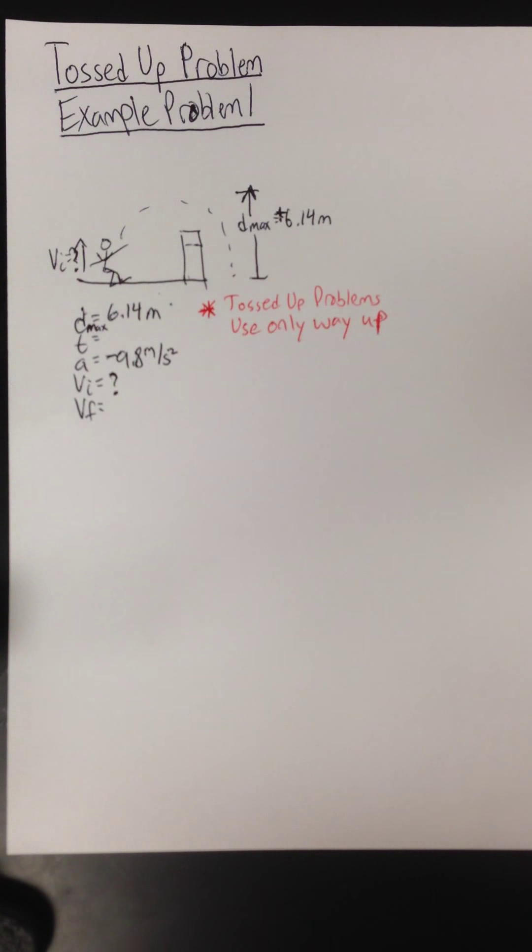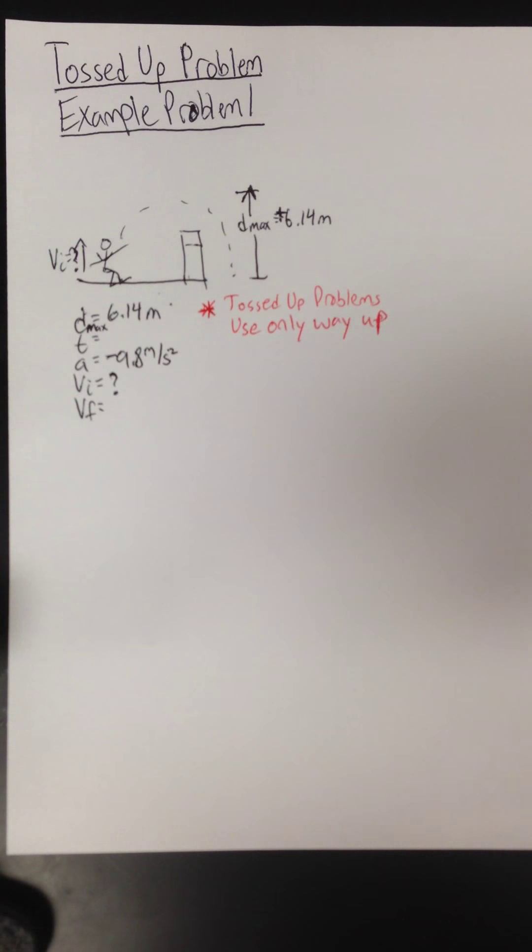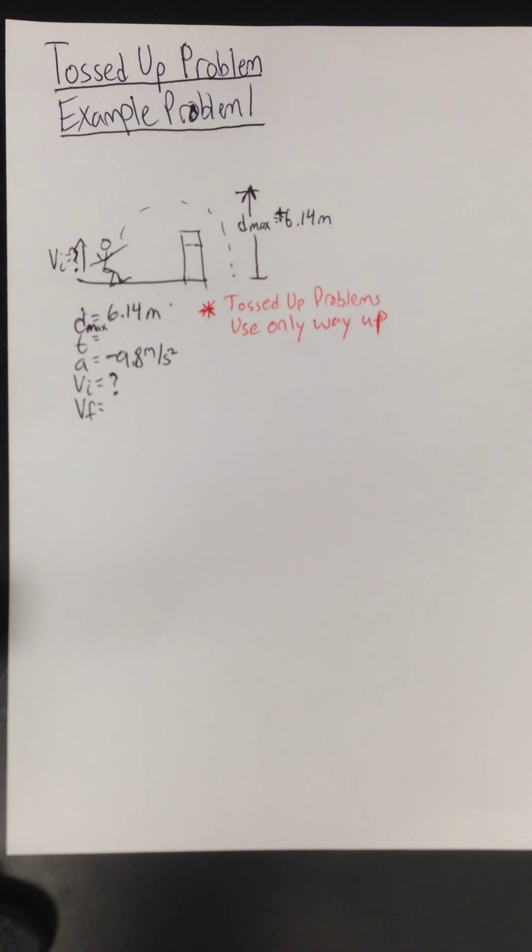Tossed up problems use only way up. So every given distance, time, acceleration, initial velocity, final velocity, should all represent only the way up, not the whole flight, nor the way down. And that's going to be our problem-solving method for tossed up problems. That's something you're just going to have to know. You're just going to have to remember.